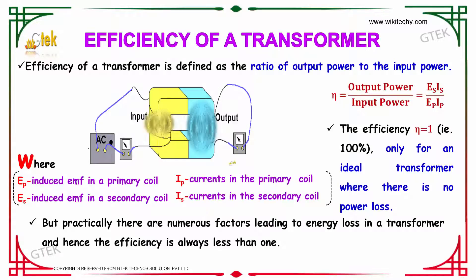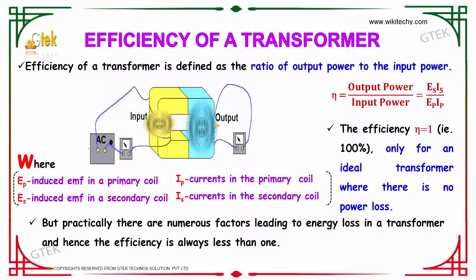Practically, there are numerous factors leading to energy loss in a transformer, and hence efficiency is always less than 1.